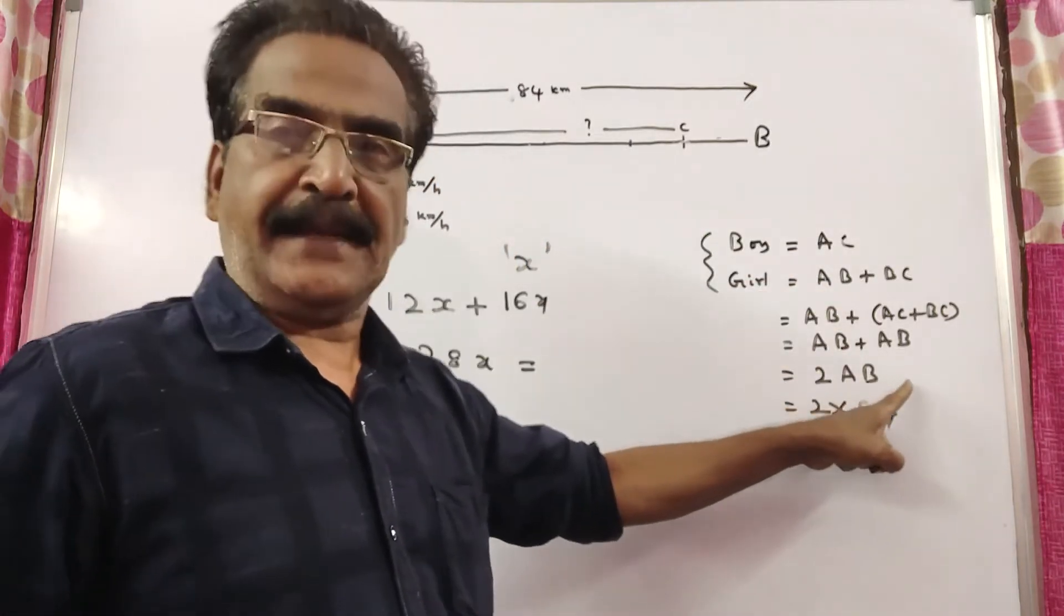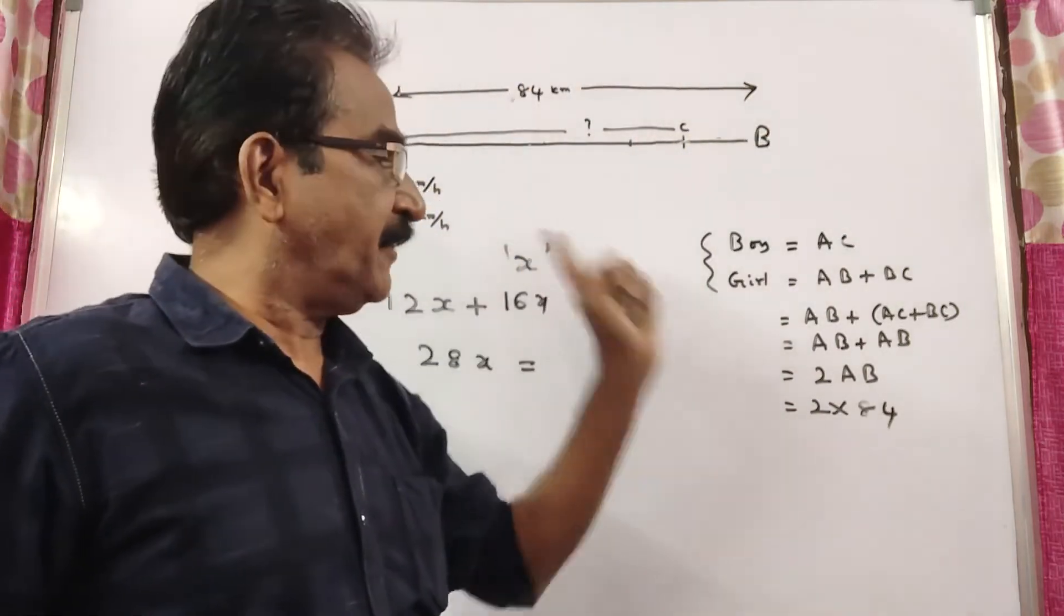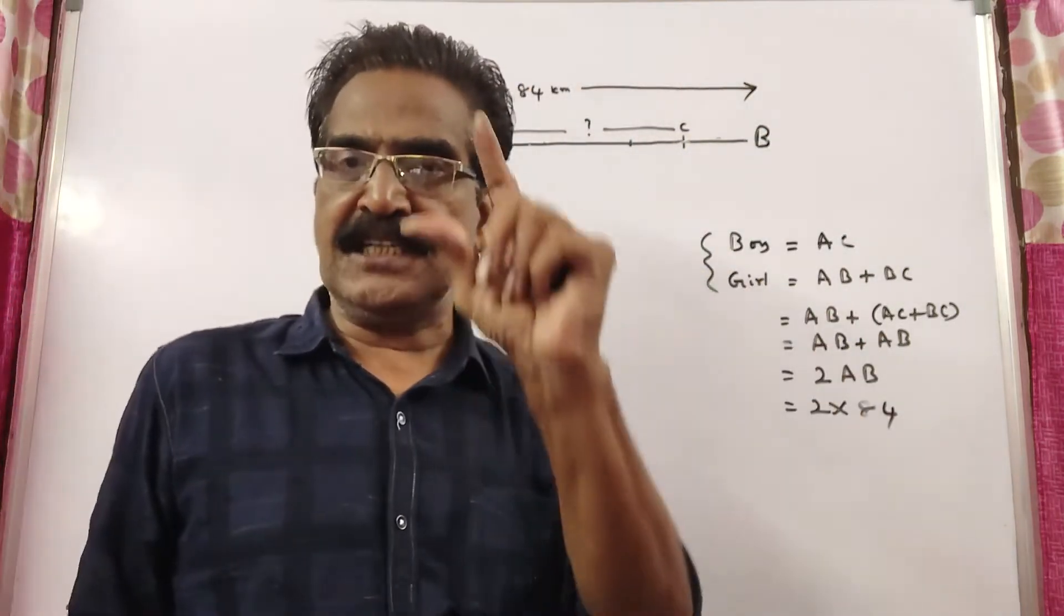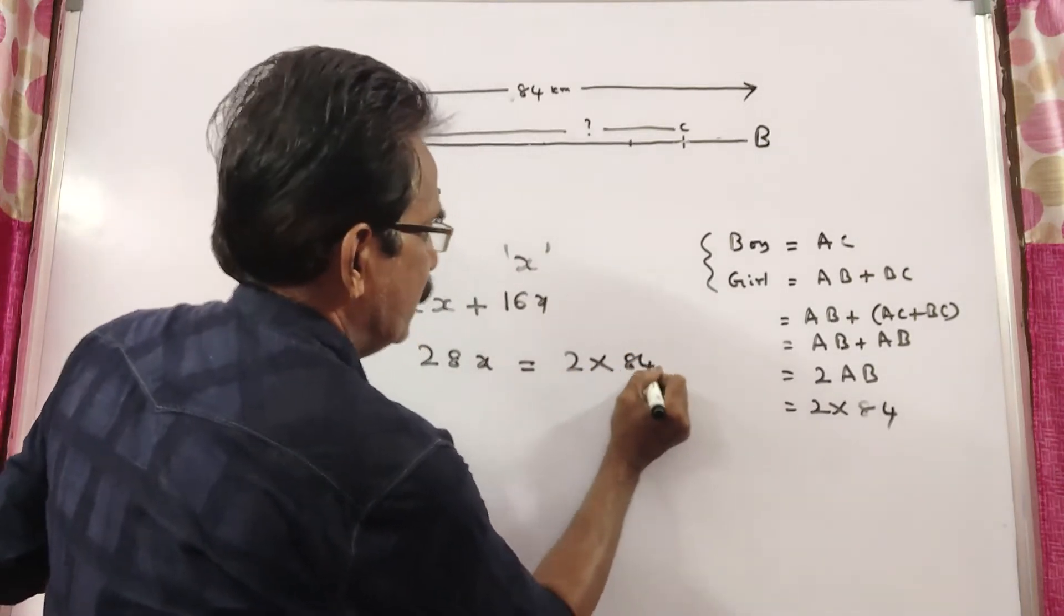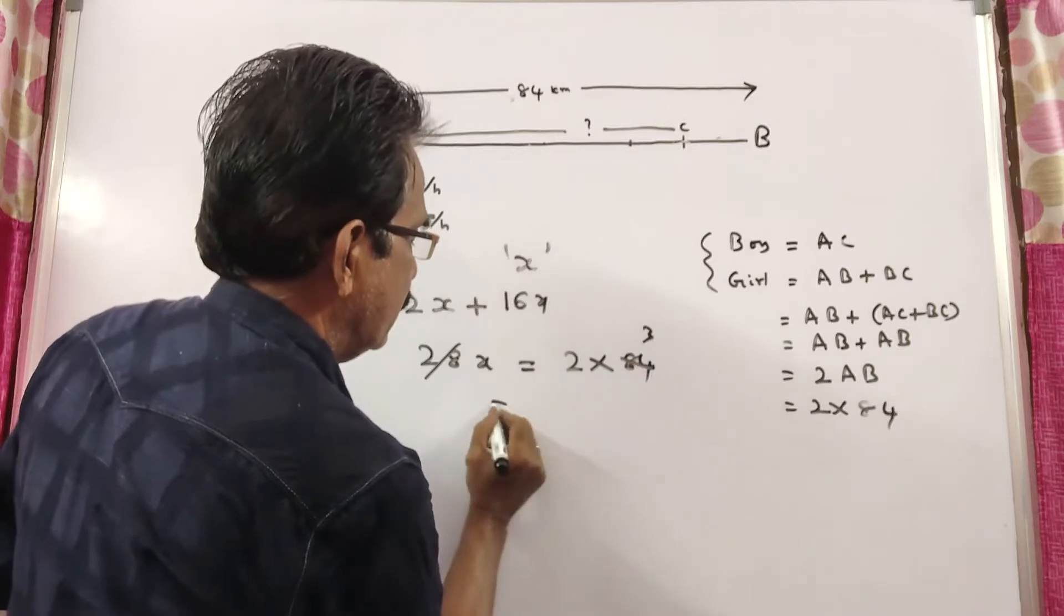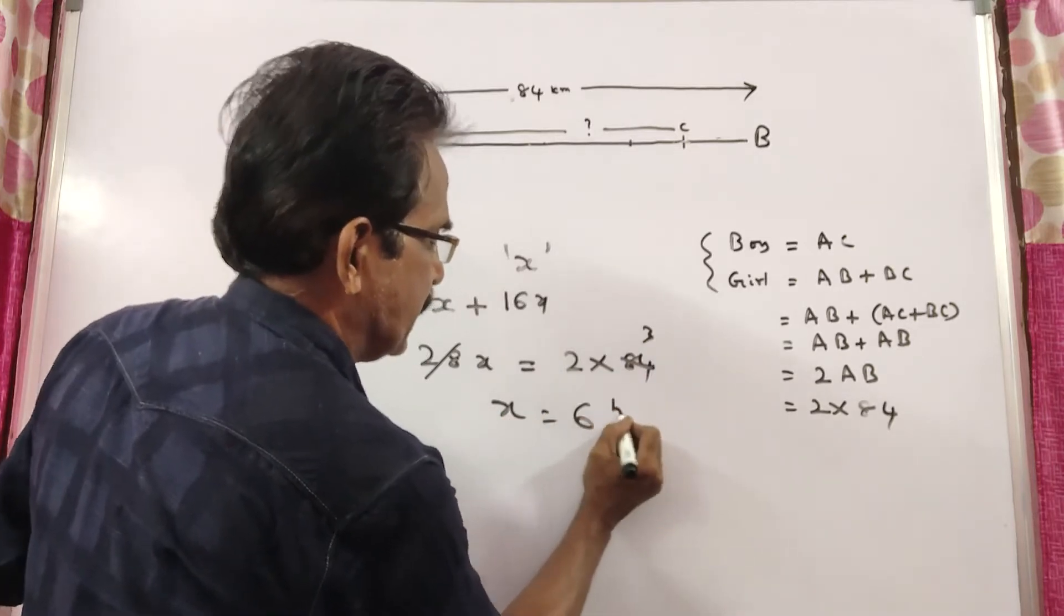This comes to 2AB. AB is 84, so 2 into 84 equals 168. Since 28X equals 168, X equals 6 hours.